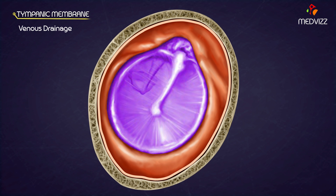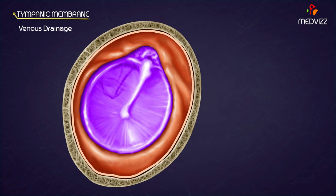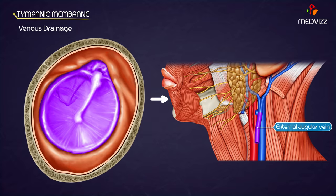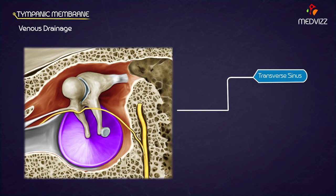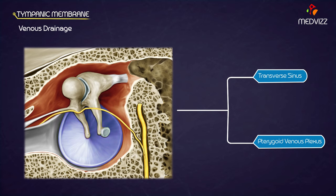Venous drainage. Veins from the outer surface drain into the external jugular vein. Veins from the inner surface drain into the transverse sinus and the pterygoid venous plexus.